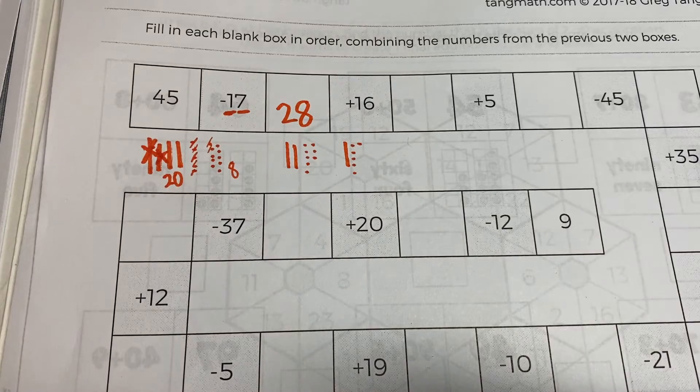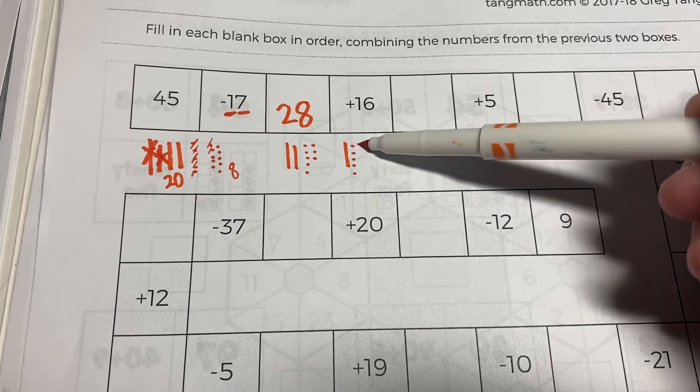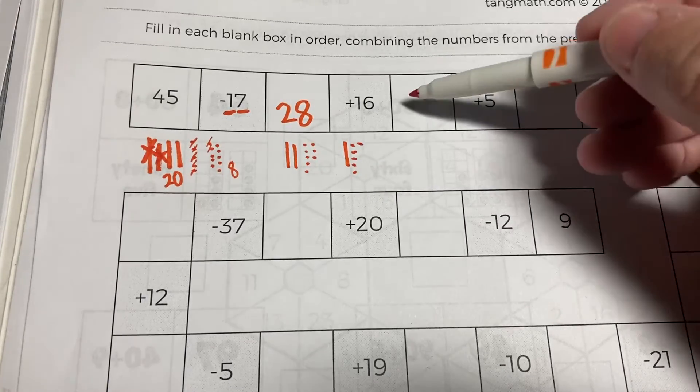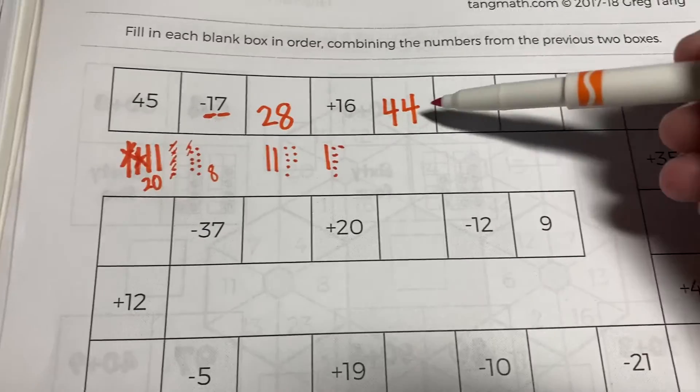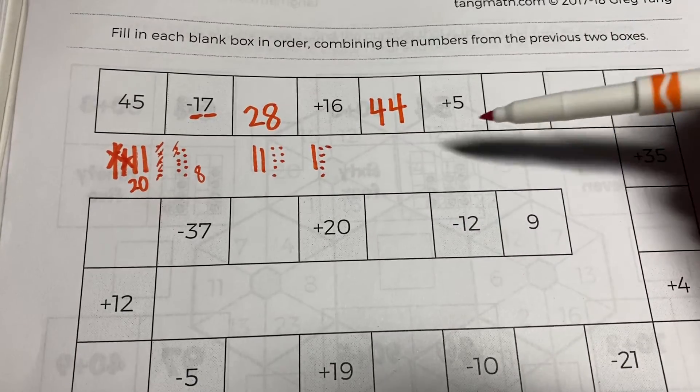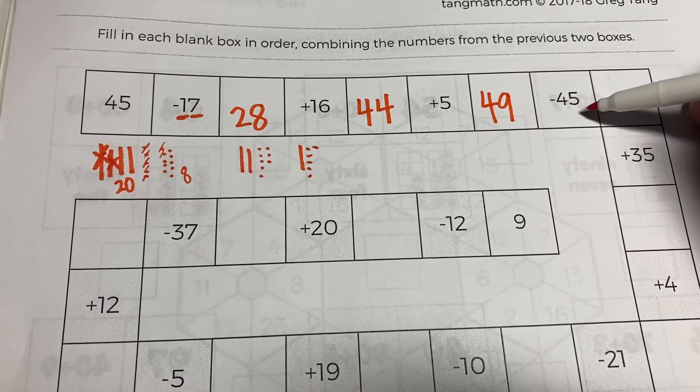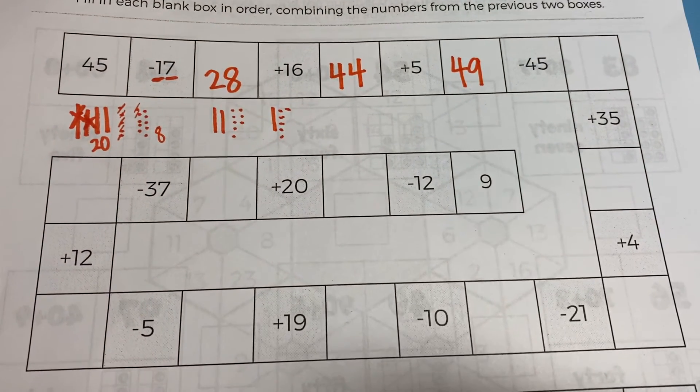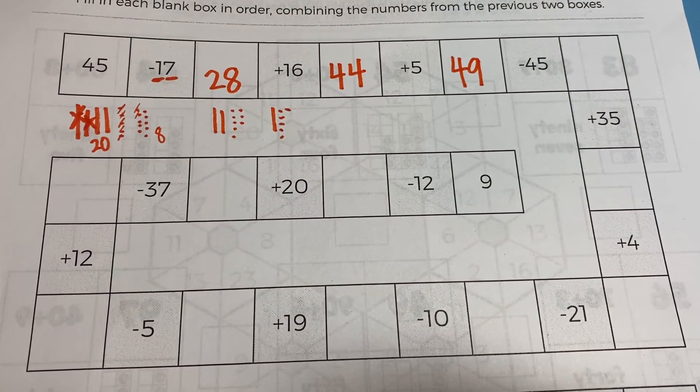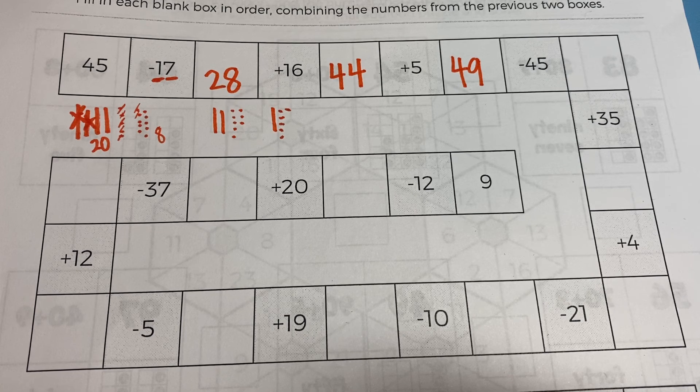So we have 38, 39, 40, 41, 42, 43, 44. And then again, I can either add this model or I can count on to 49. And here, if you get stuck, you can always draw another model. So there's lots of model drawing—use your whiteboard or use the base ten blocks if you need to.